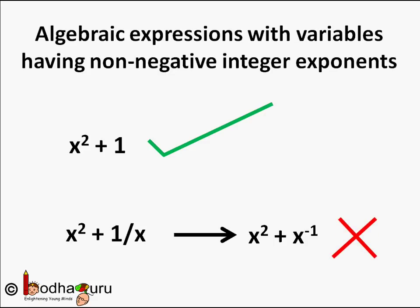For example, x square plus 1 is a polynomial because the exponent of x is plus 2. But x square plus 1 by x is not, because for the term 1 by x, which is same as x to the power minus 1, x has a negative exponent. Hence x square plus 1 by x is not a polynomial.